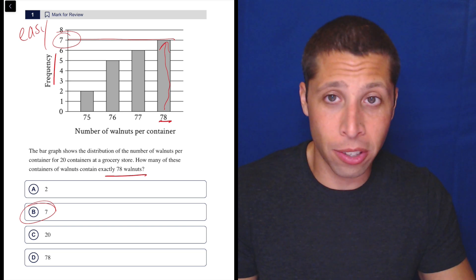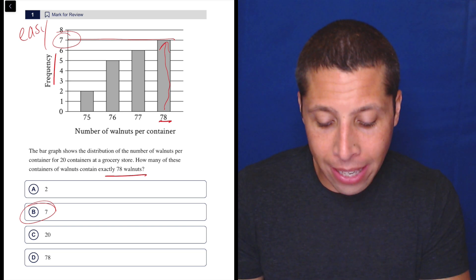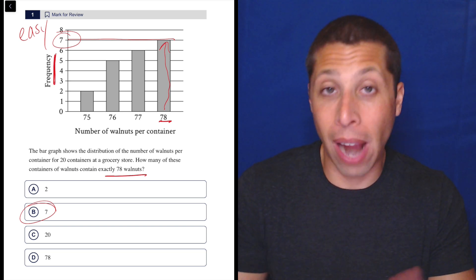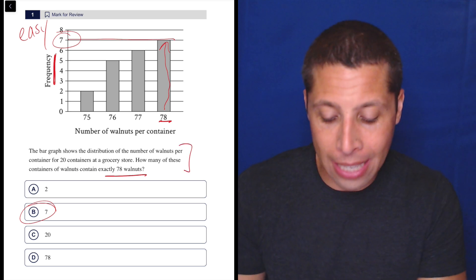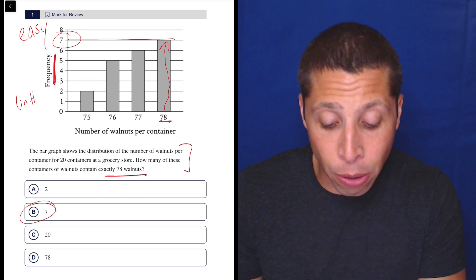But yeah, maybe the only other word of warning, just to stretch this out a bit more, is pay attention to the graph or maybe even the story, the axis labels. Sometimes they'll be like, this is the frequency in thousands.